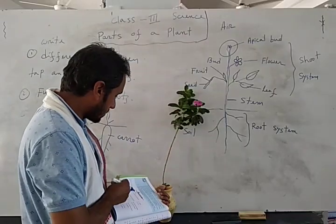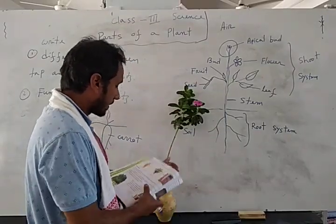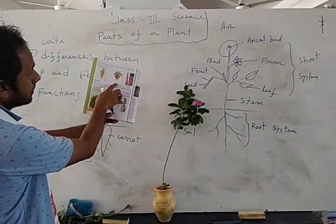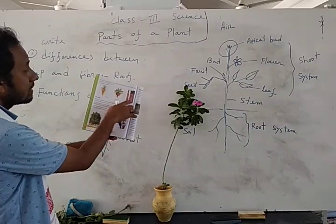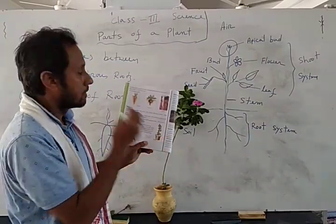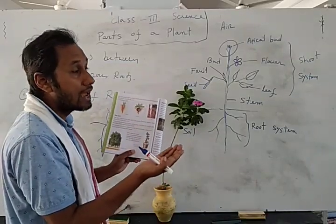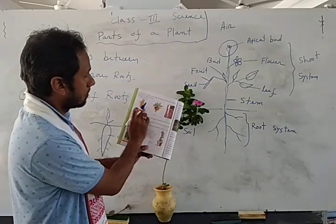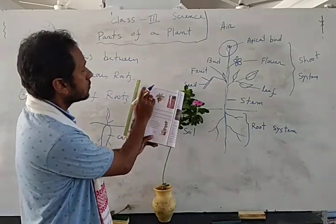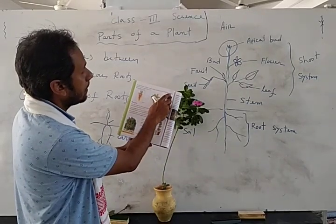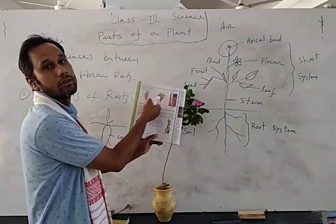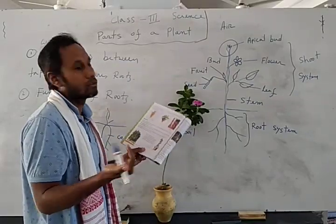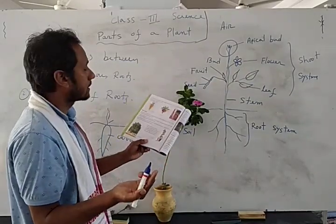Number three function: look at page number 50 — carrot, beetroot, radish. These are actually modified roots. Some plants modify their body parts to store food. In some plants such as carrot, radish, and beetroot, the food prepared by the plant is stored in the root. If the plant did not store food in the root, we would not get carrots to eat.